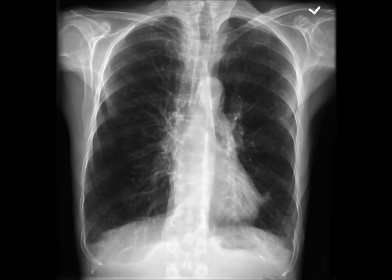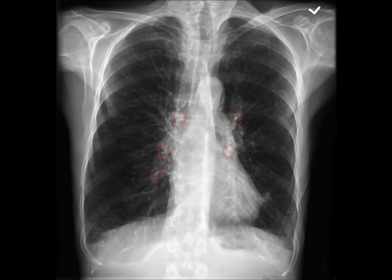Now on to the next example. The first thing to comment on is the technical quality — the patient may be rotated slightly, and it's hard to see the intervertebral spaces through the heart, suggesting underpenetration. The most striking thing to note is that the lungs are overinflated, with the eighth anterior rib intersecting the diaphragm at the mid-clavicular line. Going through our system shows flattened hemidiaphragms on both sides with blunted costophrenic angles, and you can also see some small areas of increased opacity in the hyla. The hyperinflated lungs and flattened diaphragm are characteristic of COPD.